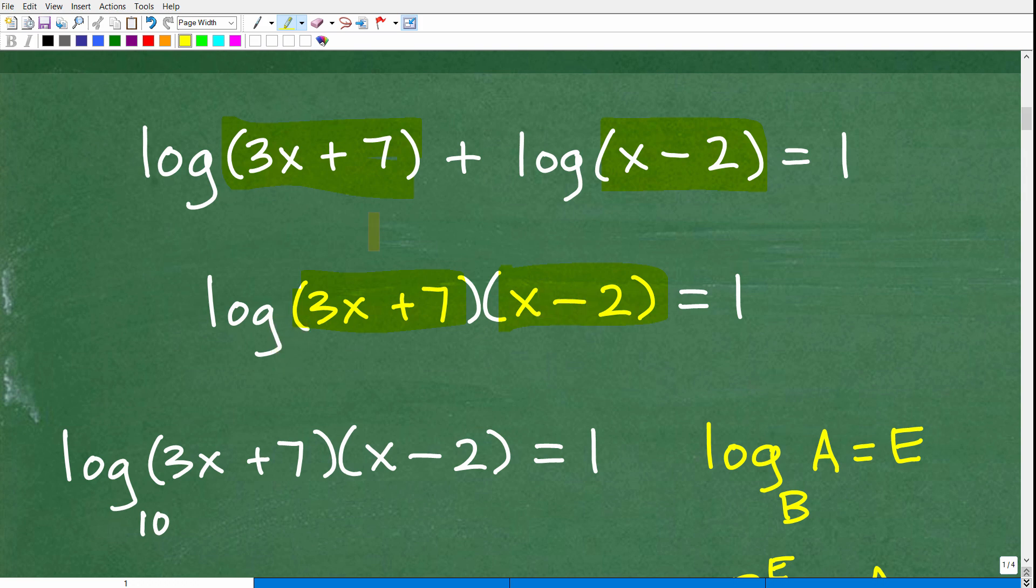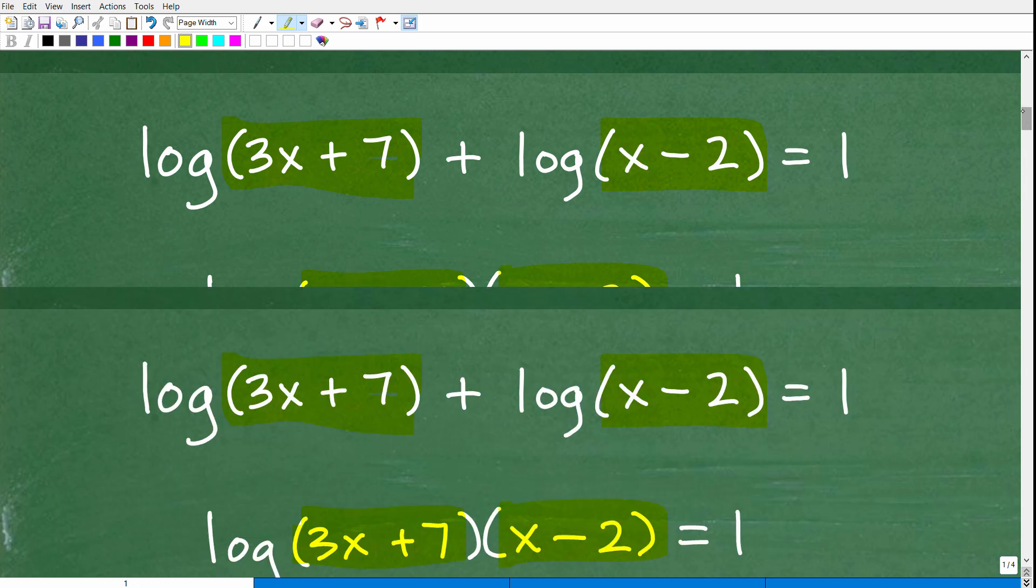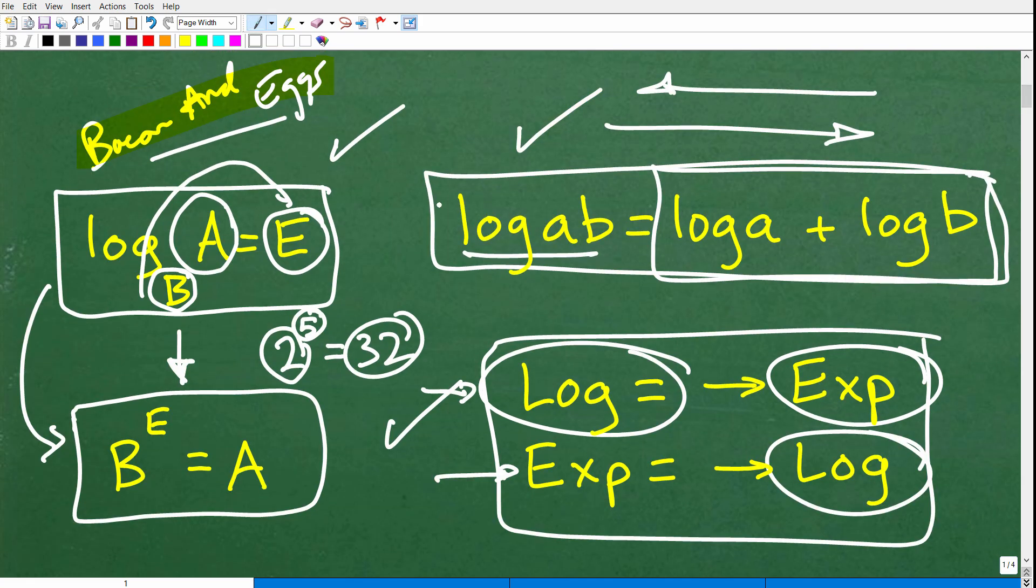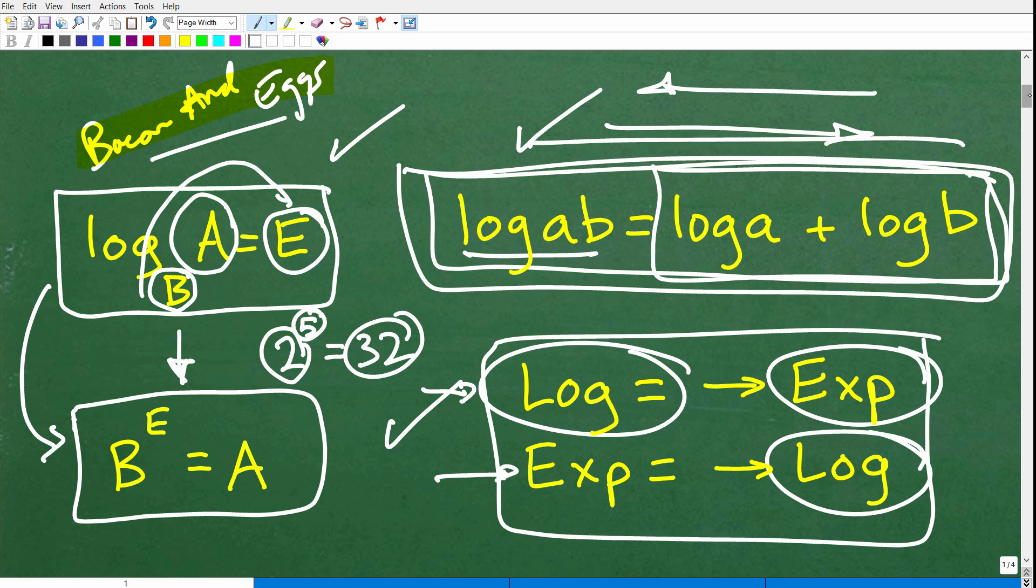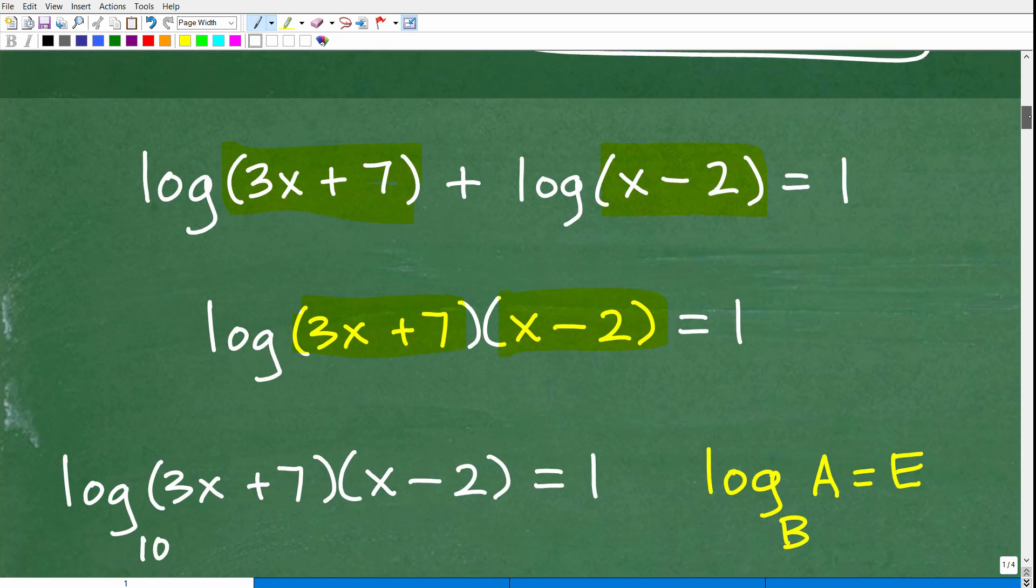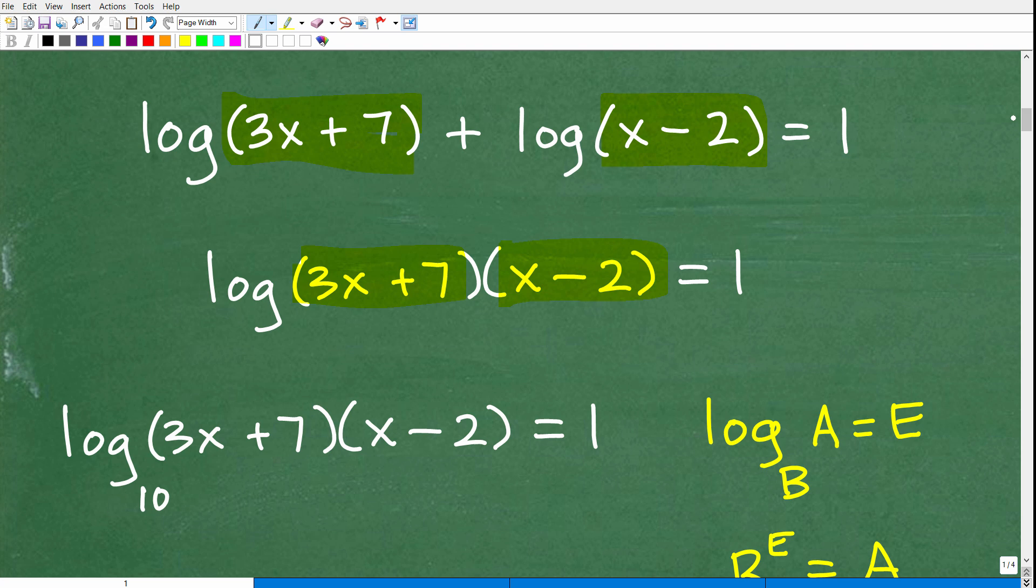You can see that this is equivalent to this. Why? Because it's following this property of logarithms right here. We're just condensing, we're going backwards. You've got to be really good at condensing and expanding before you tackle these logarithmic equations. Hopefully you understand this is equal to this, and that's equal to 1. So now this is log base 10. Just to be super clear, in the common logarithm, we don't typically write that base 10. It's just implied that it's there.